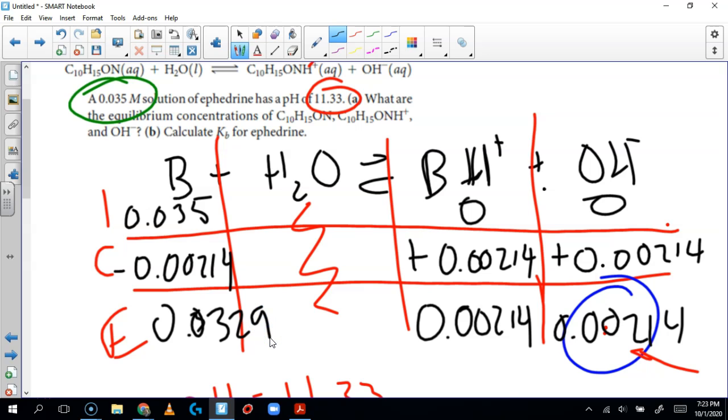So here's the thing. This gives us the equilibrium concentrations that we wanted. I kind of got ahead of myself a little bit but here in purple this is part a right there. Part a asks us to calculate the equilibrium concentrations of the ephedrine base and the ephedrine conjugate and then the hydroxide ion, and now we have to calculate the Kb.